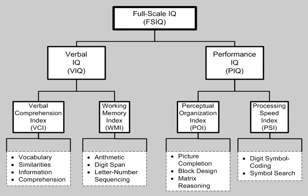The Verbal IQ included seven tests and provided two subindexes: verbal comprehension and working memory. The verbal comprehension index included the following tests: information, similarities, and vocabulary. The working memory index included: arithmetic, digit span, and letter-number sequencing. Comprehension is not included in these indices, but is used as a substitution for spoiled subtests within the WMI and VCI, respectively.